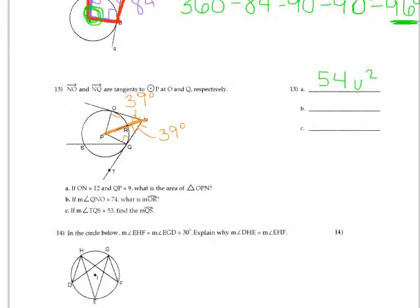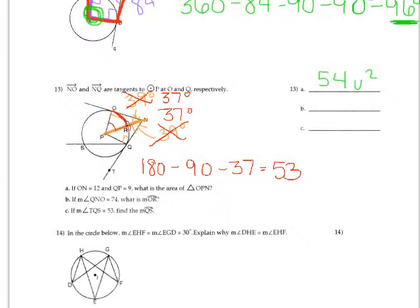And then I want the measure of arc OR. So really what I need is this little angle right here, because that's the central angle that's going to match that arc OR. And this is a triangle, which has 180 degrees. So I can calculate this by doing 180 minus the 90 and minus the 37, which comes out with 53 degrees. So that means that central angle is 53, which means the arc here is also 53 degrees.